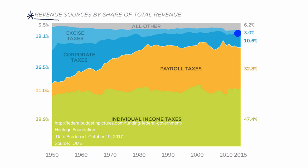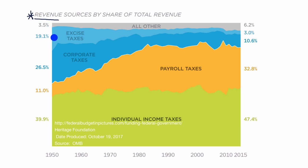One thing to keep in mind: this visual just shows the breakdown — it's not showing the absolute level. If you were seeing the absolute level of government revenue, you would see that grow as the nation's GDP grew as well. But in broad categories, where does that revenue get spent?